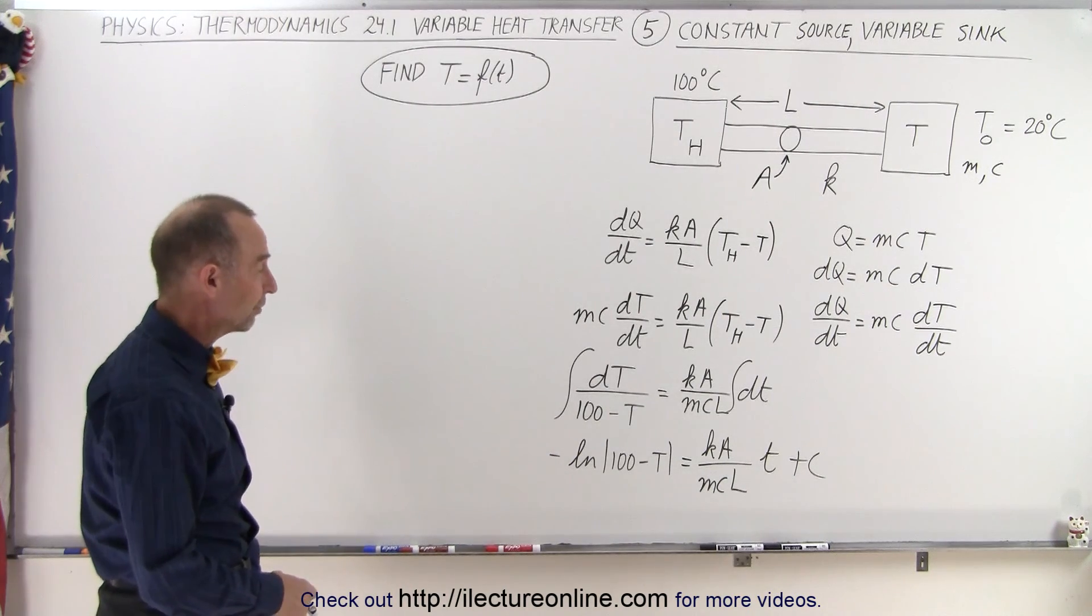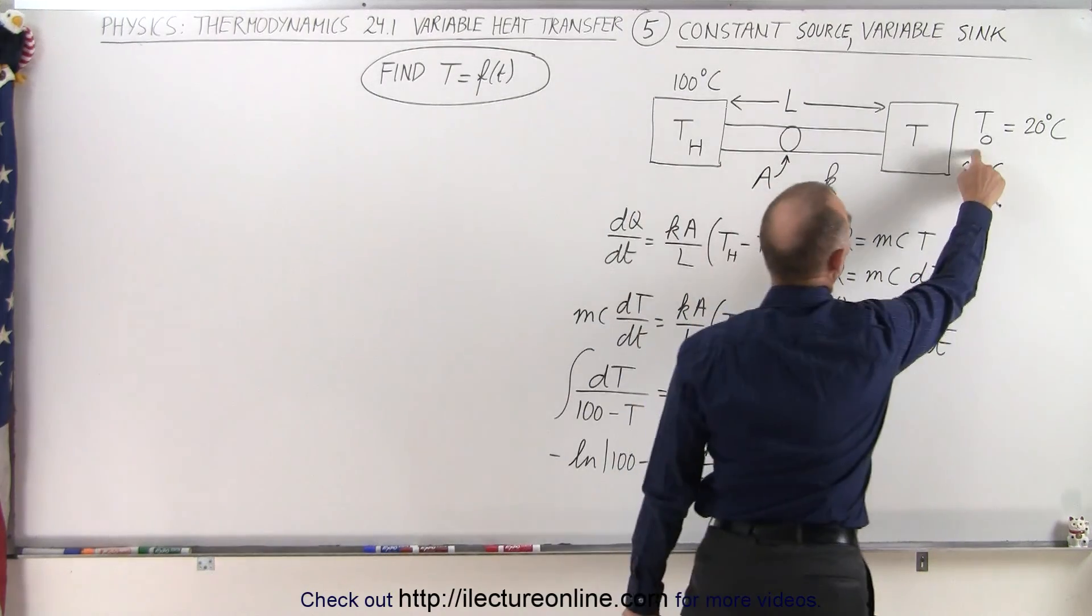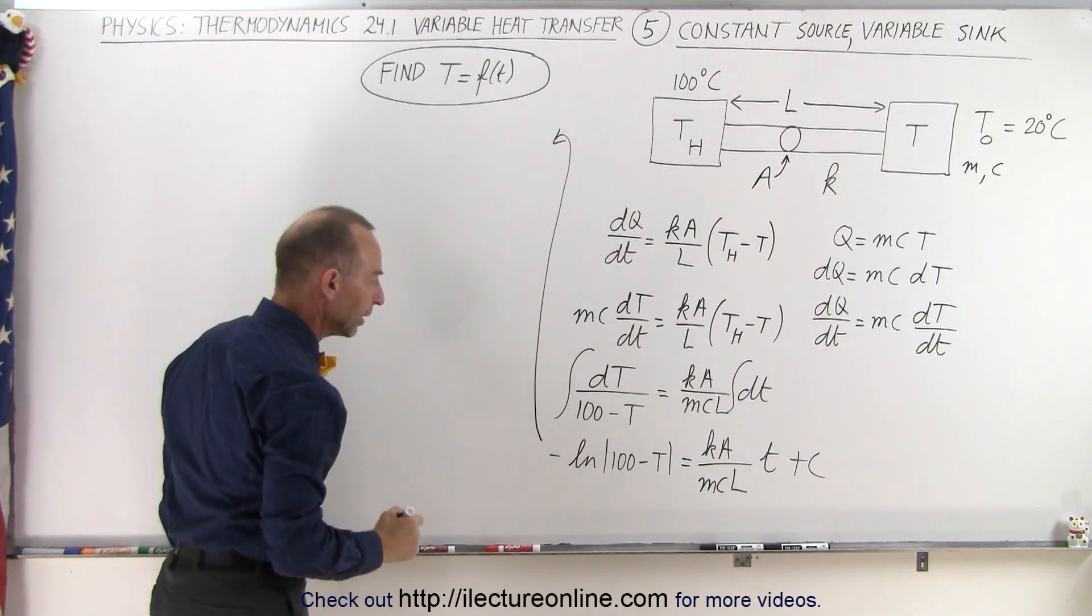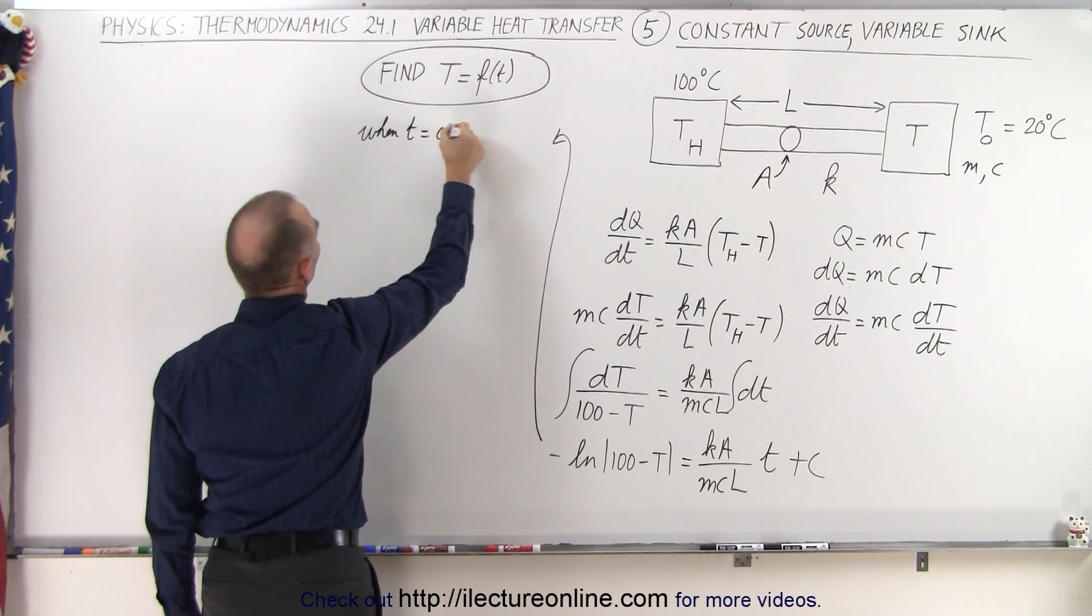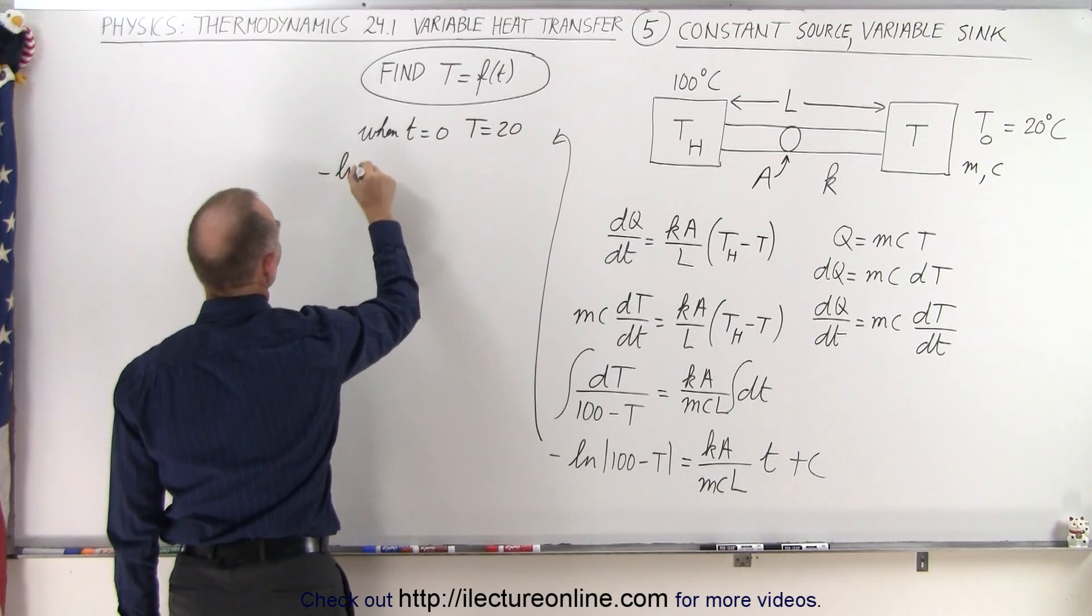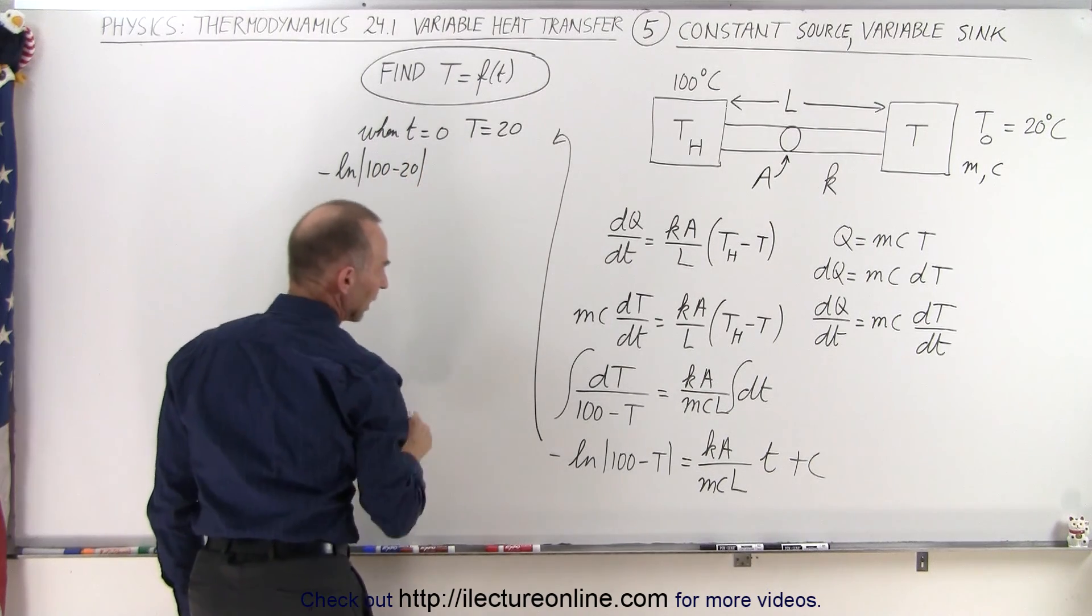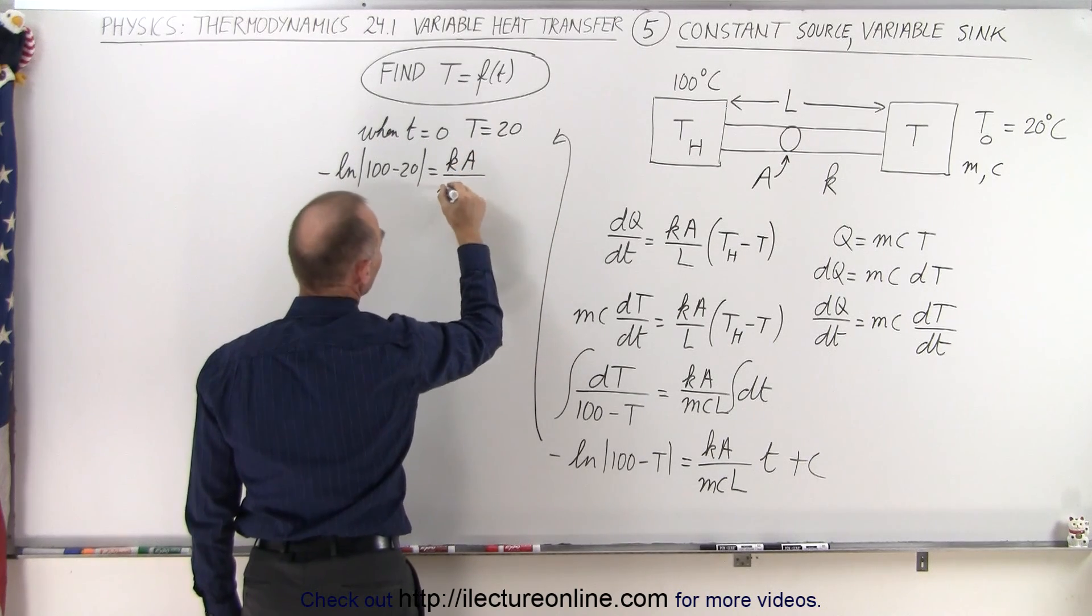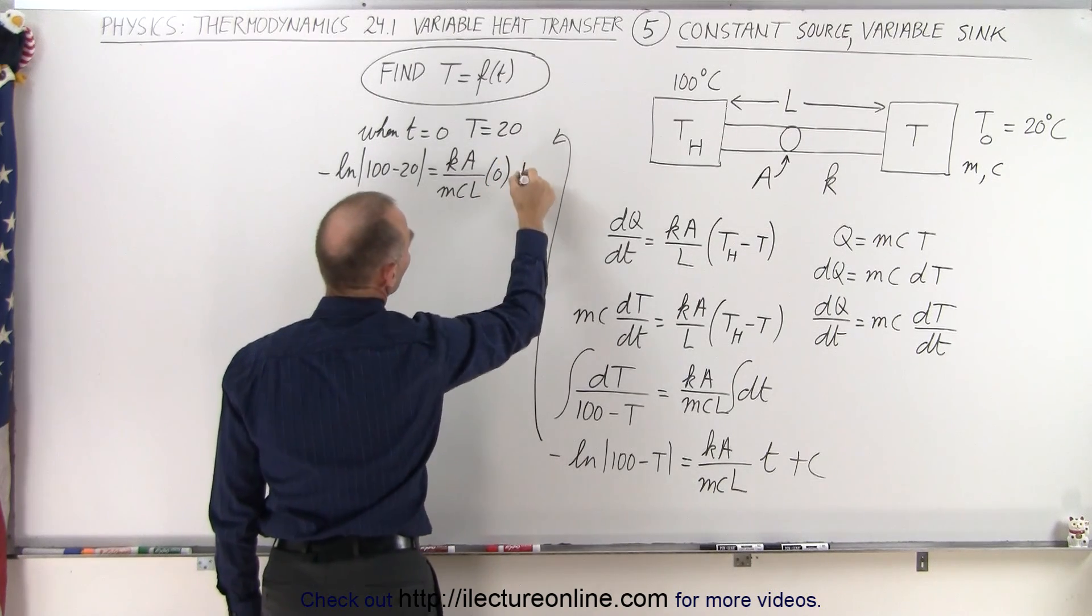So now let's figure out what that constant of integration is. We can do that by realizing that the initial temperature started at 20 degrees centigrade. So when time is equal to 0, T is equal to 20. So let's go ahead and plug that in. So we end up with negative the natural log of 100 minus 20 is equal to KA divided by MCL times 0, we plug in 0 for T, plus the constant of integration.